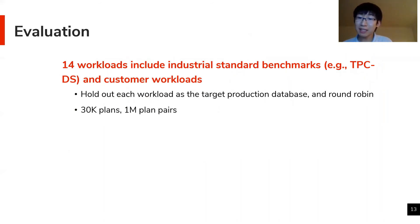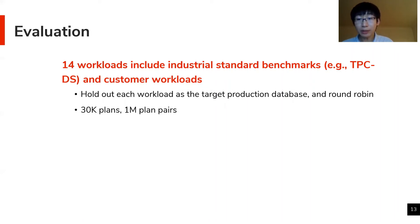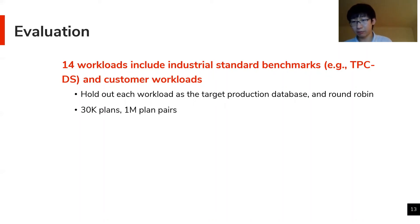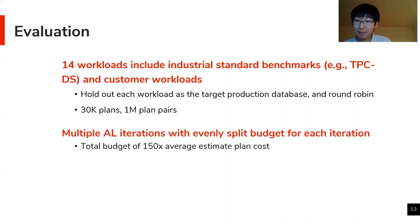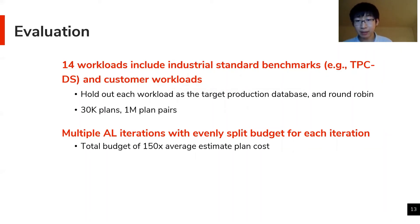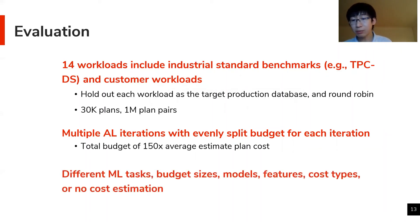We evaluate the effectiveness of the active data collection platform with the HAL strategy using 14 workloads in total. To simulate a deployment environment, we hold out each workload as the target deployed database, train the ML model with data from the remaining 13 workloads, and test the active data collection on the held-out workload, doing round-robin for all 14 and averaging. We evenly split the budget among multiple active data collection iterations and collect a batch of labels and retrain the ML model once per iteration.